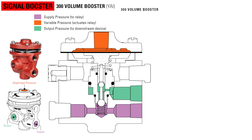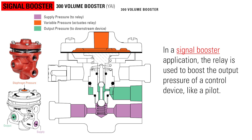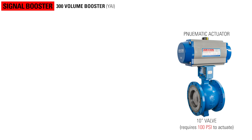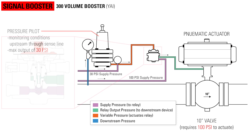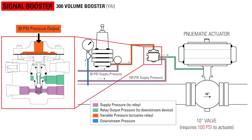In a signal booster application, the relay is used to boost the output pressure of a control device like a pilot. For example, here is a pneumatic actuator on a large valve that requires 100 psi to actuate. A pressure pilot is monitoring conditions upstream of the valve through a sense line. However, the pilot has a maximum output of 30 psi, well under the 100 psi required to actuate the large valve. So when the pilot reaches its set point, it sends its pressure output of 30 psi to the relay via the variable pressure line. The relay then responds by sending 100 psi from the separate supply line through its output to the large valve actuator so it can open.